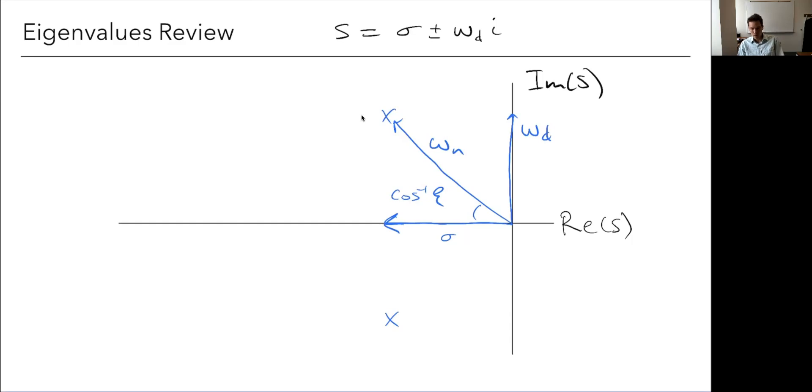First, what does it mean if my eigenvalues are on the left half plane versus the right half plane? What about if they are on the real axis versus away from the axis? Or what if they are close to the imaginary axis or far away from the imaginary axis? If I'm close or far away from the real axis or close or far away from the imaginary axis. Just take a second and think about those things.